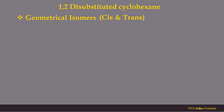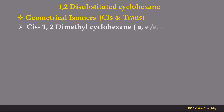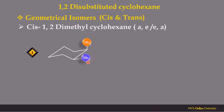First we will discuss the conformational analysis of cis-1,2-dimethylcyclohexane. In cis-1,2-dimethylcyclohexane, one substituent is at the axial position and the other is at the equatorial position. The substituent at C1 is axial and at C2 is equatorial. Both substituents are on the same side of the general plane — the methyl group at C1 and C2 are both projecting above the plane of the molecule.